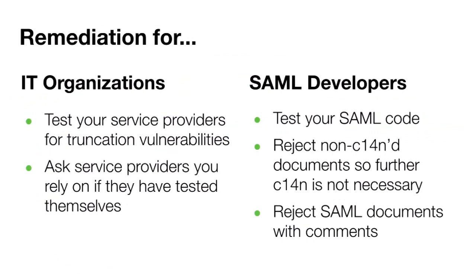Before I get into how IDPs affect exploitability, let's cover some of the remediation of the common truncation vulnerability. Both the identification and remediation process depend a bit on your relationship with the service provider. If you manage or administer service providers, your two best options are probably asking service providers if they're vulnerable, or just spinning up a browser proxy and testing things yourself. If you're someone who has written a SAML service provider, I'd recommend following the weaponized unit test strategy to identify if your library or implementation is vulnerable. There are also other mitigation strategies, such as rejecting SAML documents that are non-canonical when received, or rejecting SAML documents that contain comments, which is probably fairly unlikely in most normal circumstances.